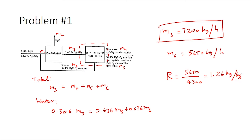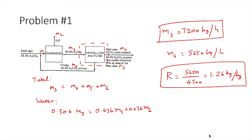Now that we have the rate of recycle and know the fresh feed, we can calculate the recycle ratio R = 5650 / 4500 ≈ 1.26 kilograms per kilogram. With this, all parameters requested in the problem have been calculated. The most important thing was identifying the right system — using the overall system first, then smaller systems for subsequent steps.